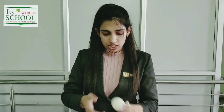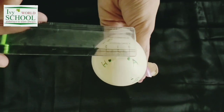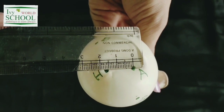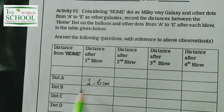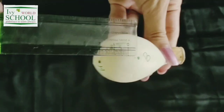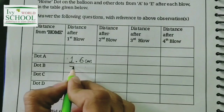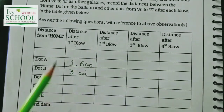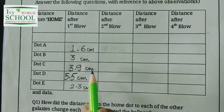Now let's start blowing air. This was my first blow. Let's measure the distance between dots A and H — it is 1.6 cm. We will note that down: 1.6 cm is the distance of dot A after the first blow. The distance of dot B from galaxy H is 3 cm — 3 cm is the distance of dot B after the first blow. Similarly, I have measured the distance of dots C, D, and E from point H and noted them down in this worksheet.